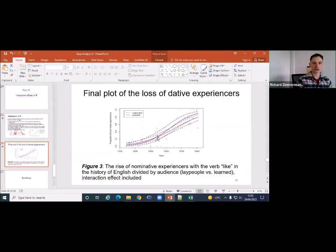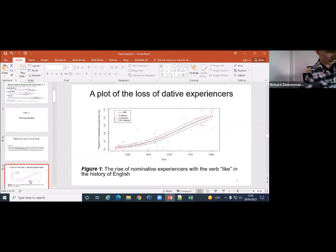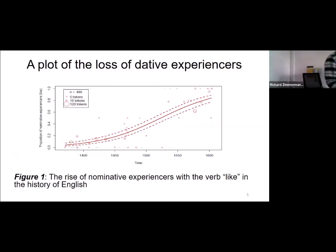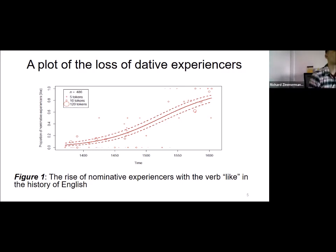In our particular case, we would want to include in our paper the very first model and the very first plot, because there's not enough evidence that the difference between learned texts and lay people texts actually matters. If this is the outcome, it's a negative outcome, and you would have to say the hypothesis is not corroborated — we do not have enough evidence to suggest that lay people and learned texts change at different speeds. Unfortunately, that's often how it goes: you have a great idea you want to test, but the data doesn't support it.